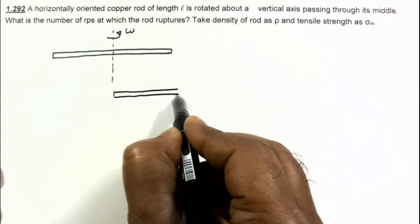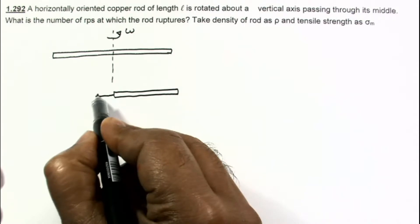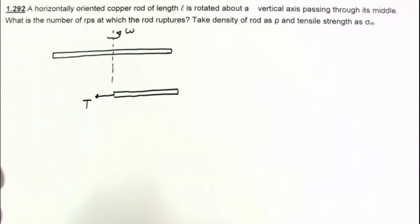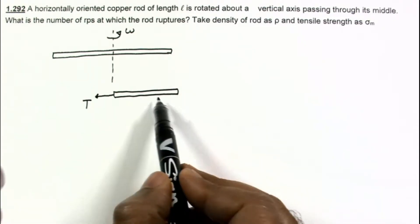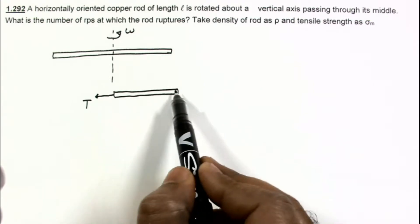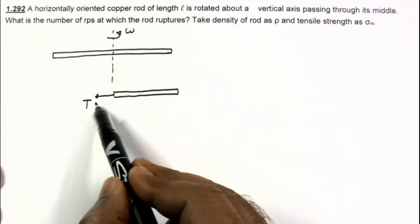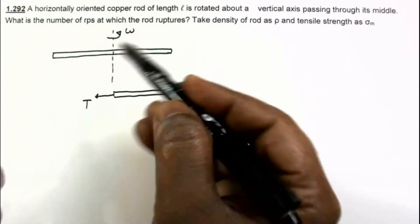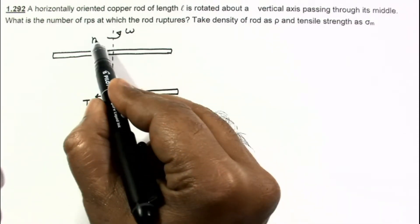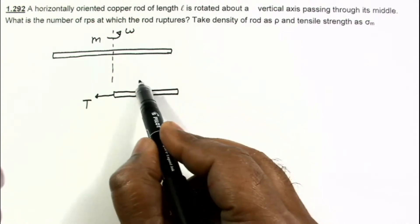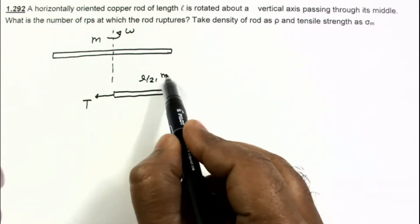This is the half rod. Suppose tension at this location is T, and this T is providing the necessary centripetal force for the circular motion of this rod. Suppose mass of the rod is m, its total length is l. This length is l/2 and this mass is m/2.